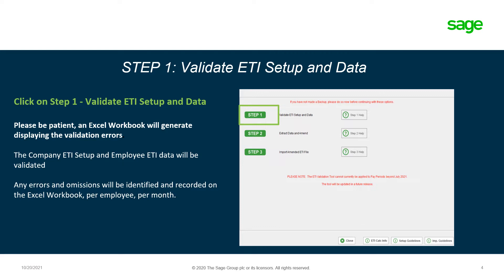Click on step one, validate ETI setup and data. Please be patient — an Excel workbook will generate displaying the validation errors. The company ETI setup and employee ETI data will be validated. Any errors and omissions will be identified and recorded on the Excel workbook per employee per month. Should you need assistance per step, click on step one help. There are also ETI calculation information buttons, setup guidelines and import guidelines available at the bottom of the screen.